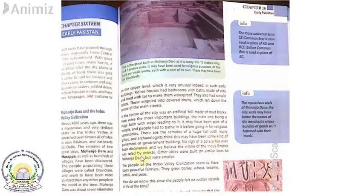No sign of a palace has ever been discovered. We believe the whole Indus empire was ruled by priests. Looking at the remains of Mohenjo-daro and Harappa, we can assume there was no palace, and these large bath structures were more likely used by religious people. Other cities were built on similar lines to Mohenjo-daro, but were smaller.